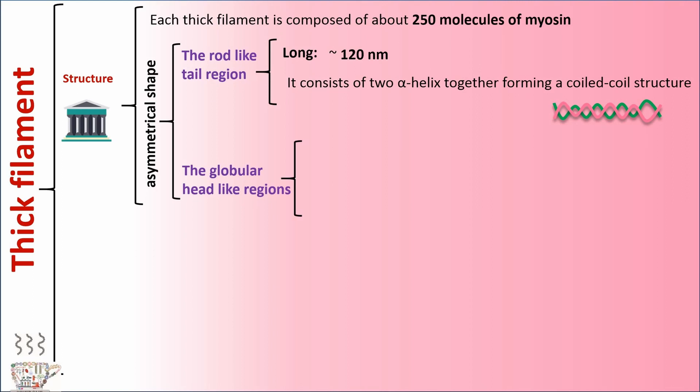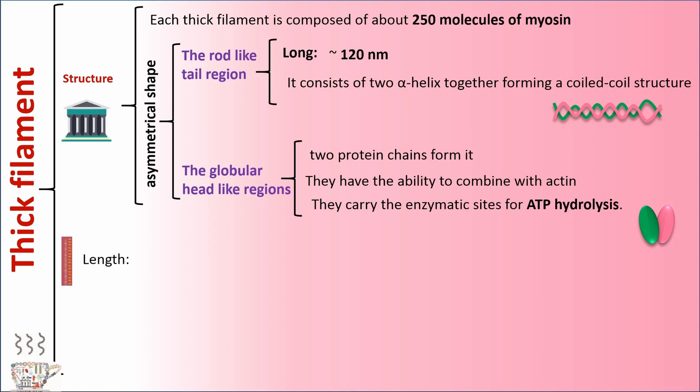And head-like regions: Two protein chains form it. They have the ability to combine with actin. They carry the enzymatic sites for ATP hydrolysis. The length of thick filament is about 160 nanometers.